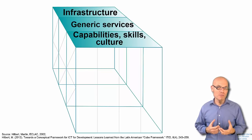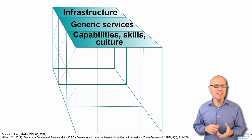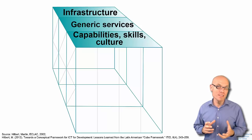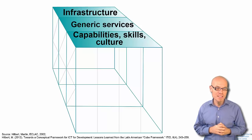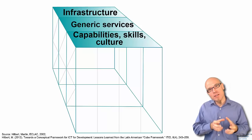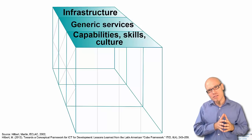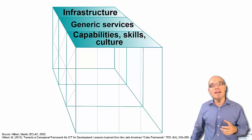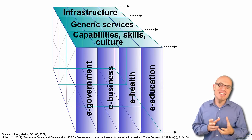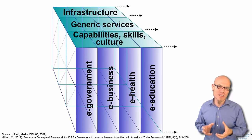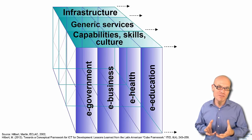Then we also need the human component — capability, skills, and cultural change — that uses, adapts, and applies this technology for our purposes. Now we put parts of the information and communication flows of different sectors of society into electronic networks. That's why people often put an 'E' in front: E-government, E-business, E-health, and E-education, when at least parts of the information and communication flows are realized in electronic networks.